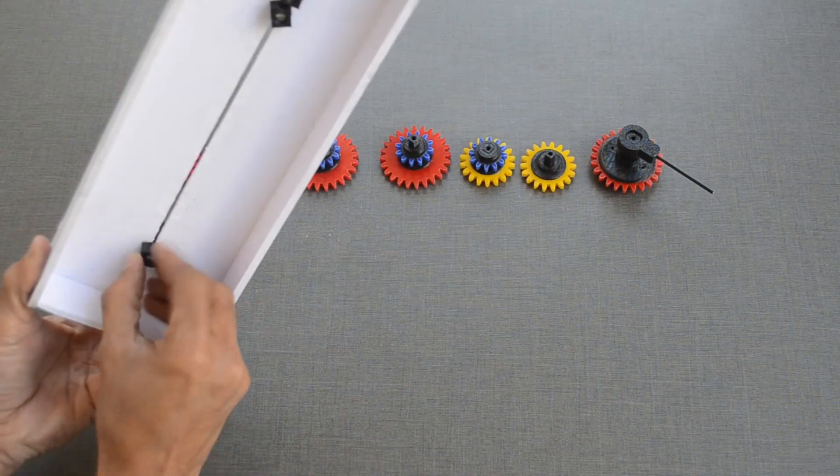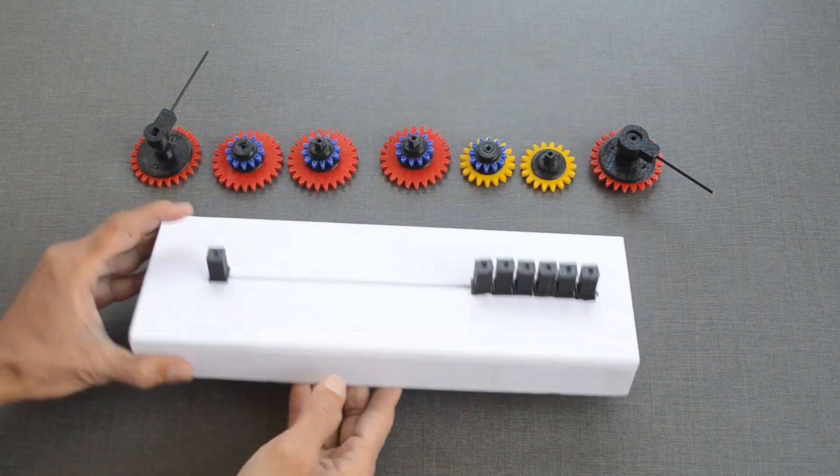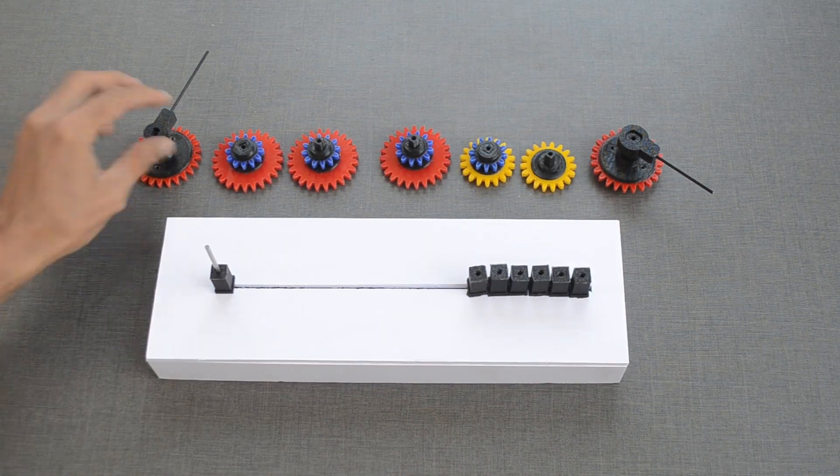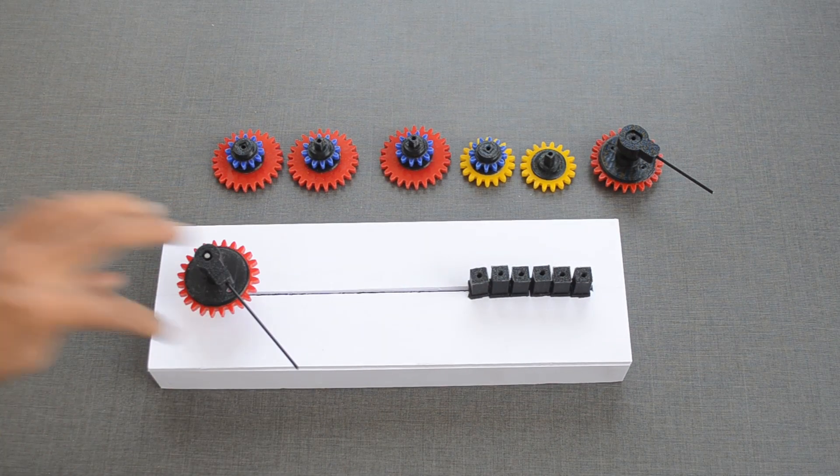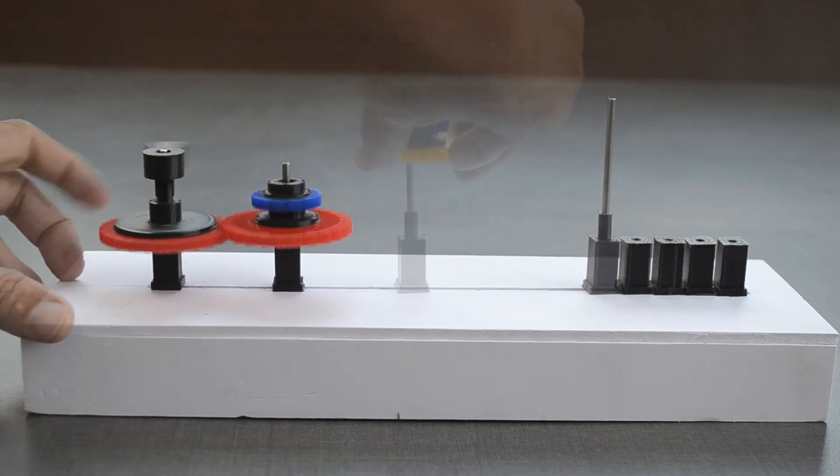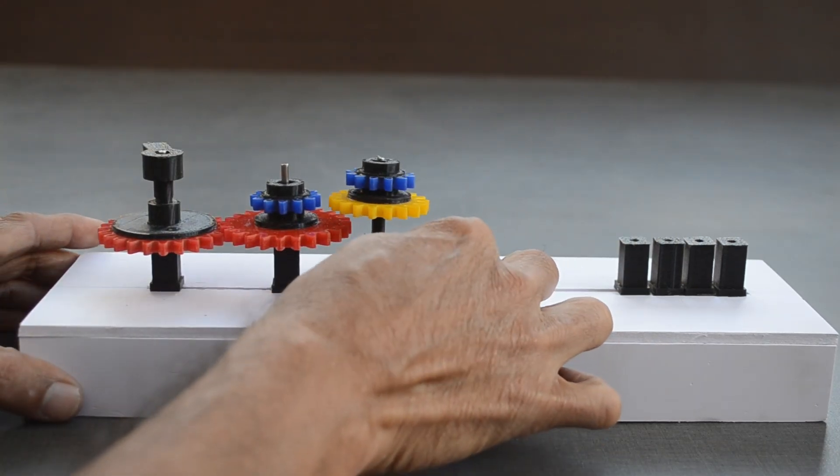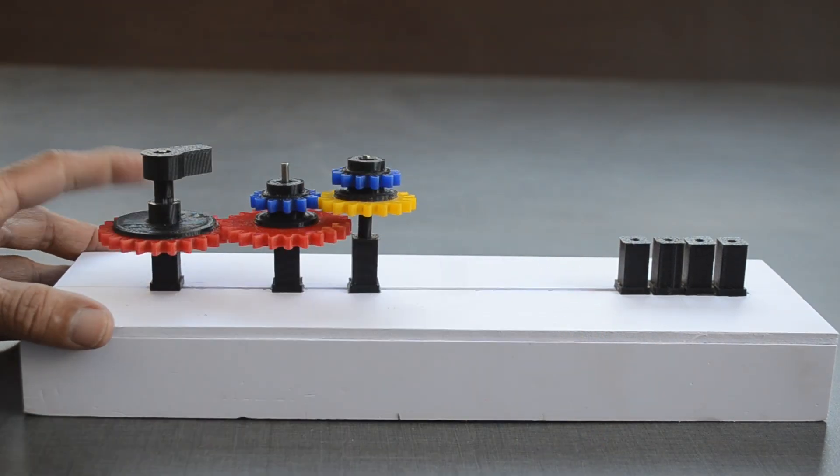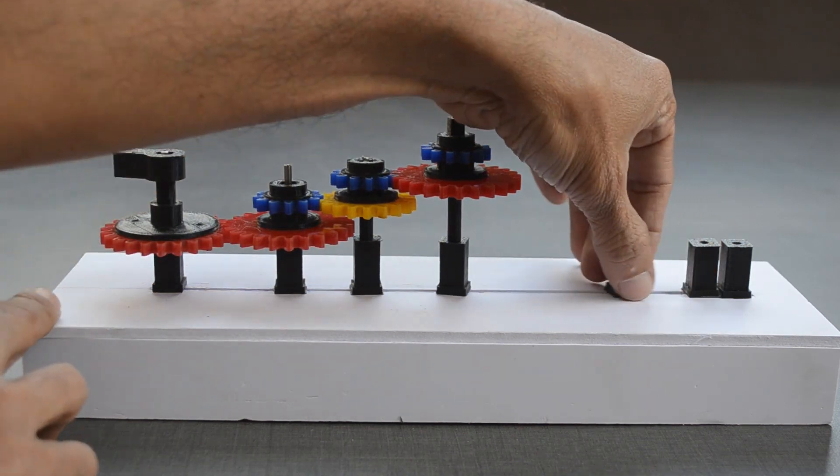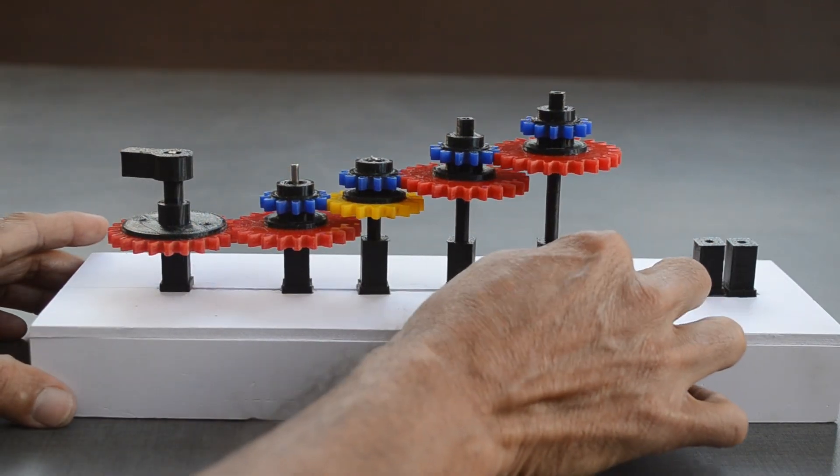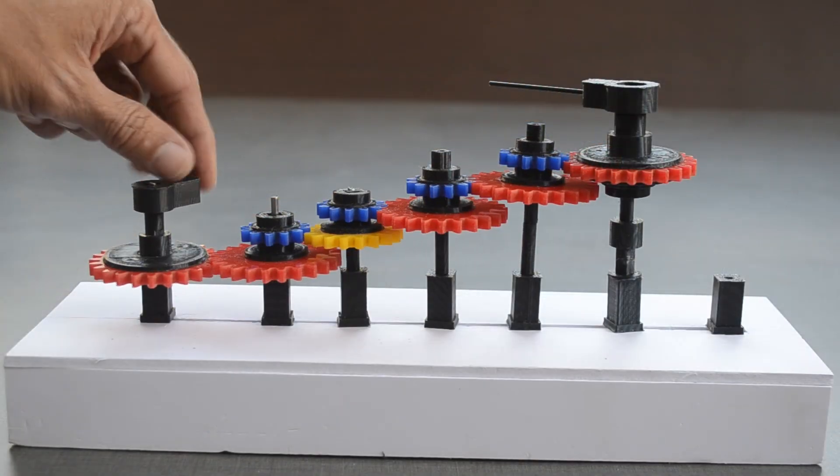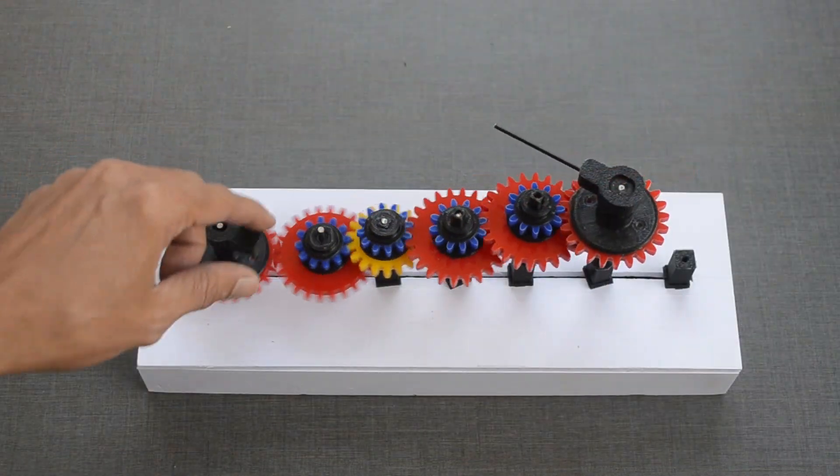We will start with this simple test setup. This gear will be our minute hand. The motion can be transferred from one gear to another like this. Let us introduce the pair one by one. With this setup, for one rotation of the minute hand, we have the expected movement of 30 degrees for the hour hand.